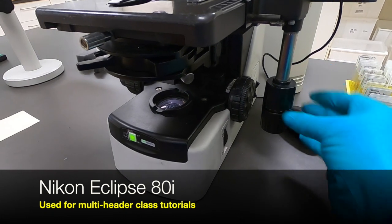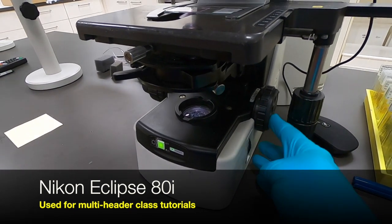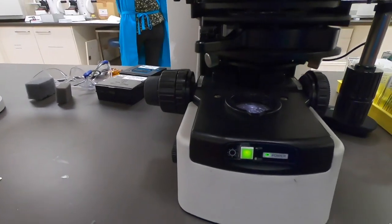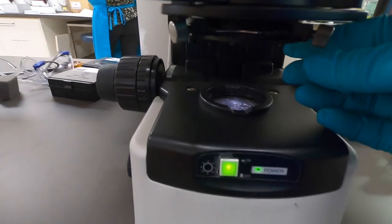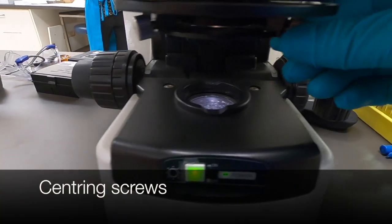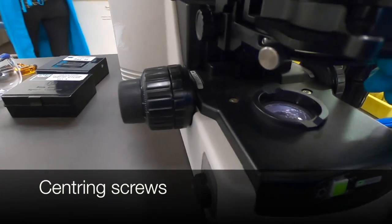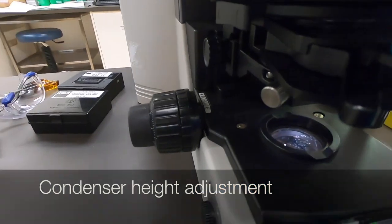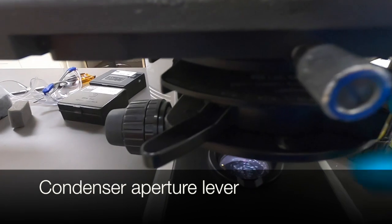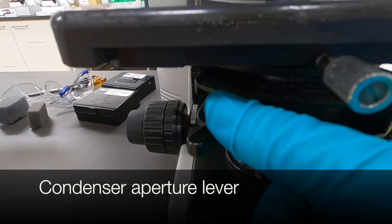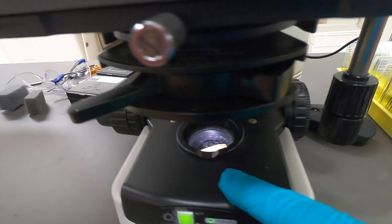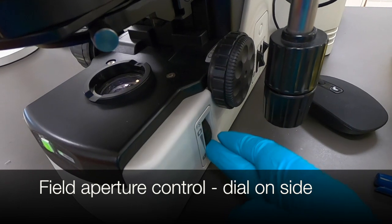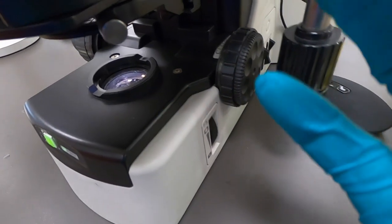And then finally, moving to the Nikon Eclipse 80i microscope, this is the one attached to our multi-header. Again, we've got the usual control over stage and focus. If we now have a look underneath, we can see we've got some centering screws for the condenser, the condenser height adjustment, and a lever for controlling the aperture of the condenser. Doesn't appear to be any field diaphragm aperture adjustment there, but down on the side here, we've got a dial for producing the same result.